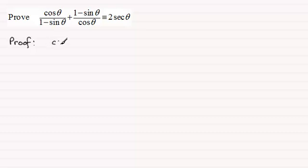So we've got the cosine of theta all divided then by 1 minus sine theta and plus the second term 1 minus sine theta all divided by cosine theta.